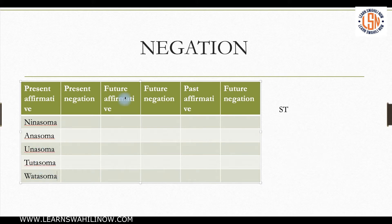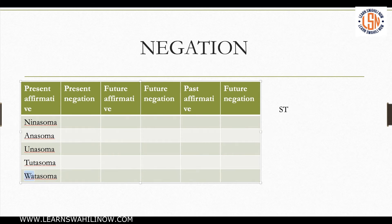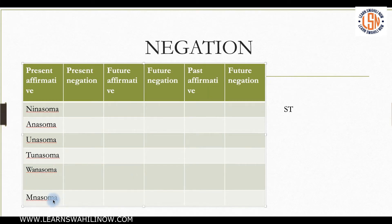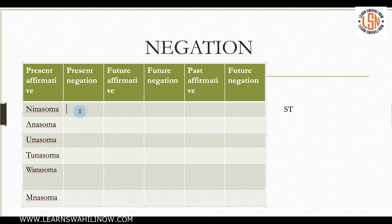These are the subject prefixes: 'ni' is for I — 'I am reading.' 'A' is for he or she. 'U' is for you. 'Tu' is for us. 'Wa' is for they. And 'M' is for y'all. So we want to maintain the tenses uniform so that we can work from each chart. 'They are reading' and 'y'all are reading.'